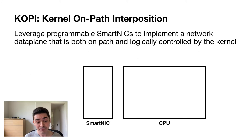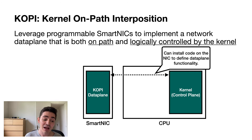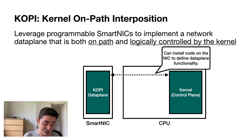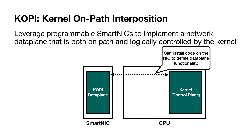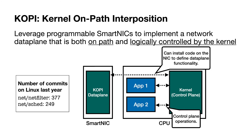More concretely, we are going to use a smart NIC with a CPU. On the CPU, we have the kernel, which acts as a control plane. The kernel is also responsible for defining the data plane functionality that runs on the smart NIC — it can install code on the NIC to define data plane functionality. That is in contrast with the traditional offload approach, where offloads are defined by hardware vendors and not the kernel. This is essential because data plane functionality changes often: in Linux over the last year alone, we saw hundreds of new commits on network filters and schedulers. Applications can talk directly with the kernel for control plane operations and with the COPI data plane for data plane operations.